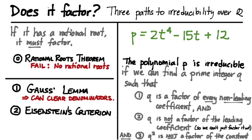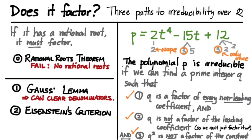This is actually a really powerful result. Let's see how it applies to our specific example. Looking at the prime factorizations of the coefficients, we're looking for a prime that divides every non-leading coefficient. Looking at these prime trees, we can see that 3 is the prime candidate. It's a factor of every non-leading coefficient. Is 3 a factor of the leading coefficient 2? Absolutely not. Finally, is 3 squared a factor of the constant? Absolutely not — 3 appears only once in its prime factorization. So the prime 3 satisfies all three properties. Therefore, Eisenstein's Criterion guarantees that this polynomial is irreducible over the rational numbers. Our p is an Eisenstein polynomial with prime 3.